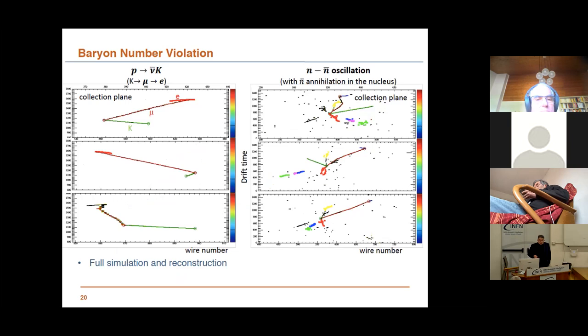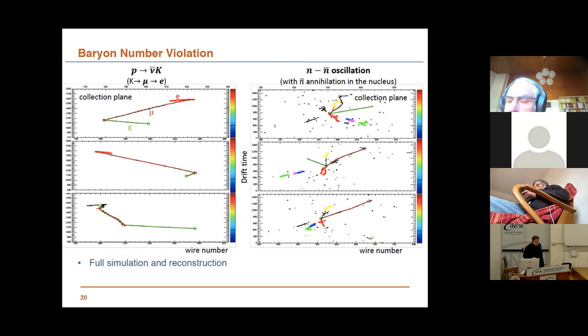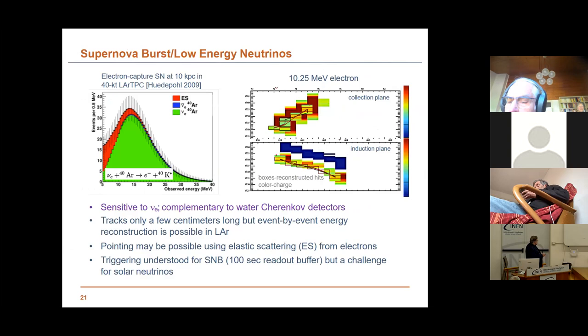For proton decay, DUNE has a specialty compared to Cherenkov experiments like Hyper-K: it can look at particles that are not emitting Cherenkov light. This is foreseen in some supersymmetric theories. The fact that you can look at very low-energy products with the sensitivity of liquid argon, doing excellent tracking and calorimetry, is an advantage.